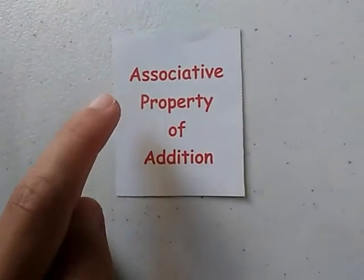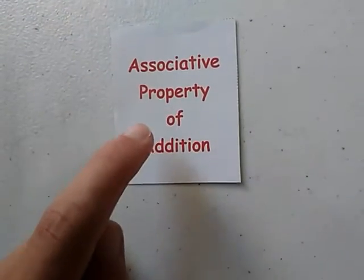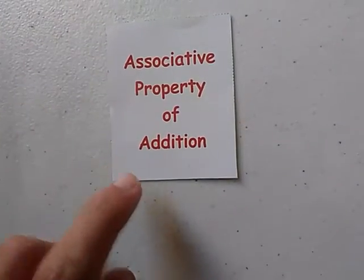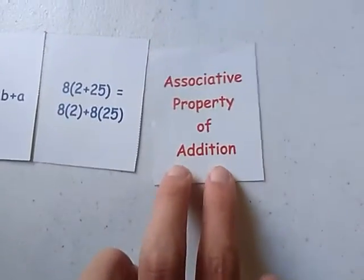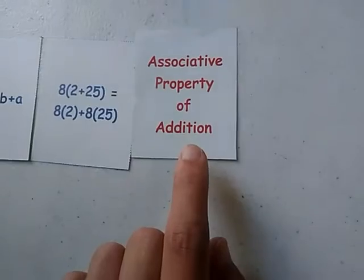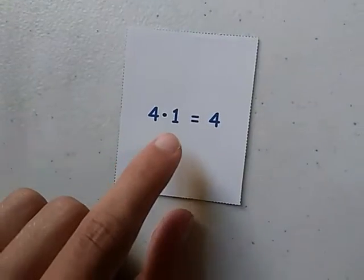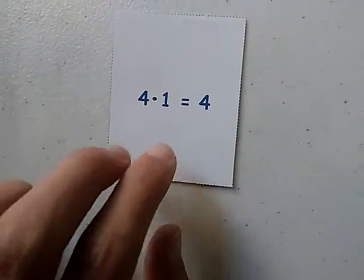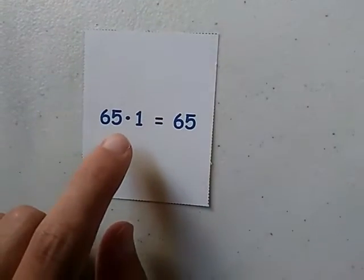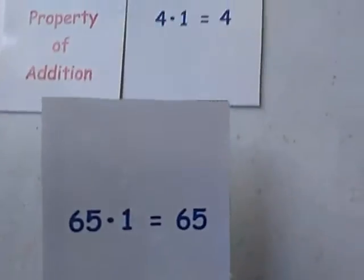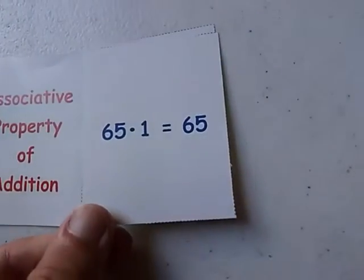Associative Property of Addition — we have not reached there yet, but this is a starter card. 4 times 1 equals 4. 65 times 1 equals 65. Sounds like this is the same stack.